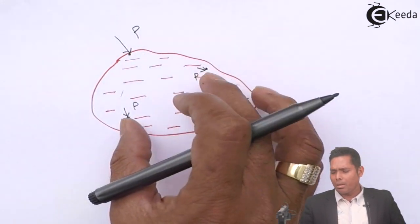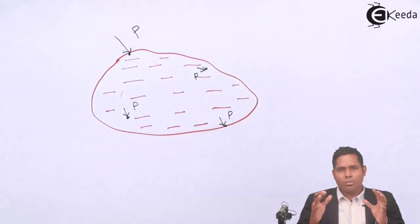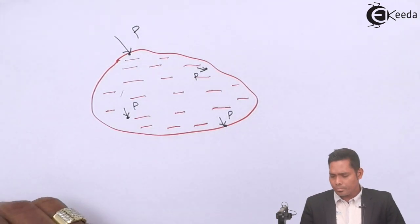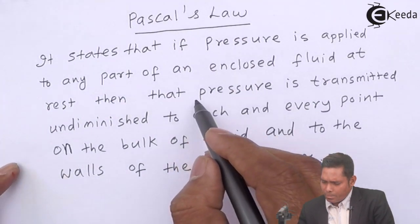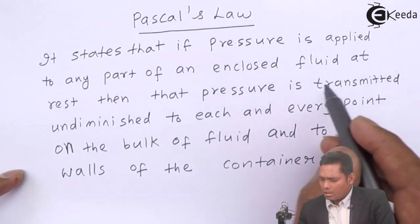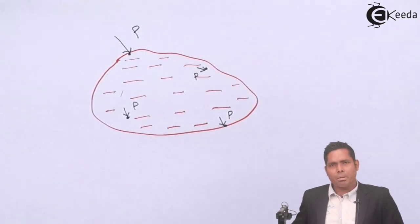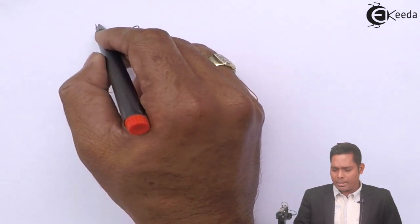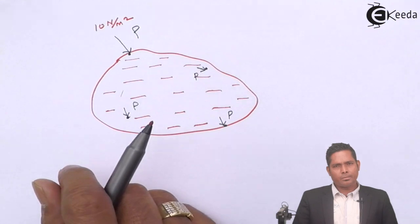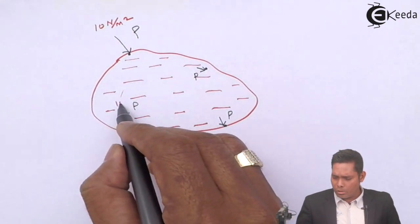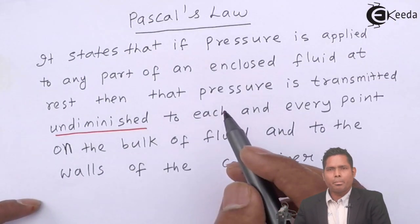Whatever pressure we are applying is developed at each and every point, whether the point is inside the fluid or on the walls of the container. The only condition is that the pressure is transmitted undiminished — meaning without any loss. The magnitude of the pressure applied here is the same everywhere. Suppose I am applying 10 Newton per meter square pressure here, then the pressure is also 10 Newton per meter square at every other point. The magnitude remains the same — this is the meaning of undiminished, without any loss in magnitude.